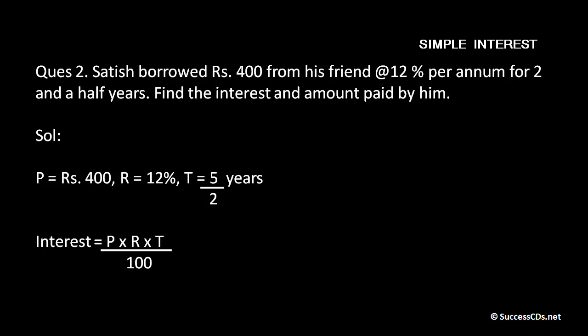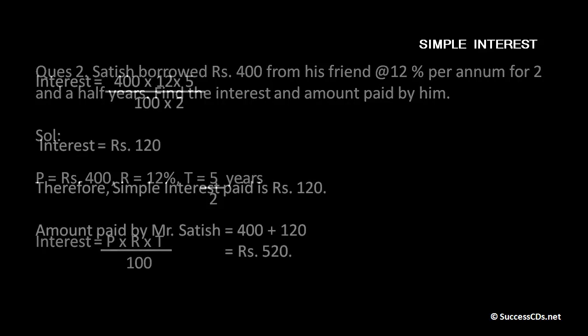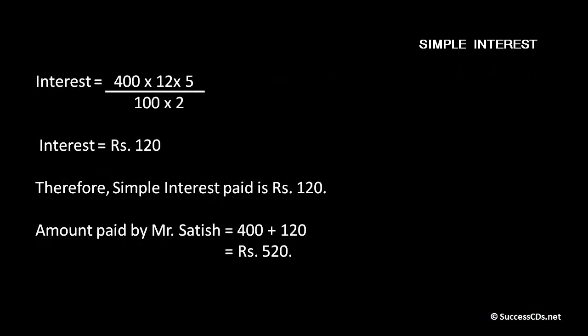write it in mixed fraction to proper fraction. That is principal comes out to be rupees 400, rate of interest is 12%, time which was two and a half years comes out to be in fraction 5 upon 2 years. So T comes out to be 5 by 2. Interest using the formula P into R into T upon 100, we write it like 400 into 12 into 5 upon 100 into 2. So the 2 comes in the denominator.